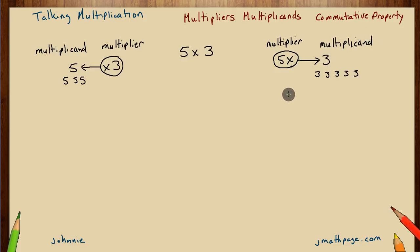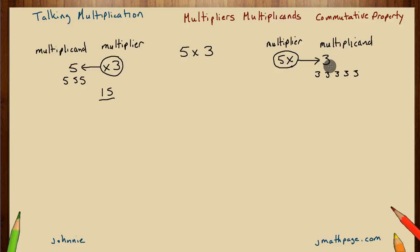When the multiplier was 3 and the multiplicand was 5, we got 5+5+5, or three 5s, which adds up to 15. When the multiplier was 5 and the multiplicand was 3, we got five 3s — 3+3+3+3+3 — which also equals 15. We end up in the same place, but in a different way. This will help us with the next thing we're going to look at.